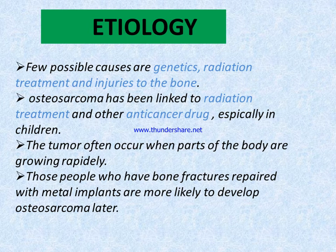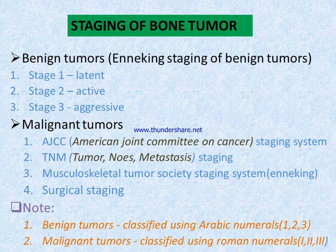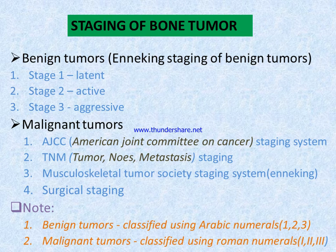There is no known etiology for some bone tumors. Staging of bone tumors is divided into two categories: benign and malignant. For benign tumors, the Enneking staging system uses Stage 1 (latent), Stage 2 (active), and Stage 3 (aggressive). For malignant tumors, there are four different classifications.